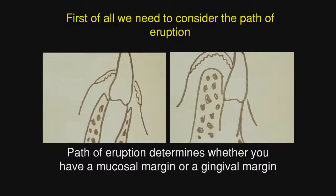One of the considerations we need to have is how the tooth erupts. As it erupts facially, you can end up with a mucosal margin even if you don't have recession, or you can have a gingival margin. So the path of insertion determines whether you have a mucosal margin or a gingival margin.